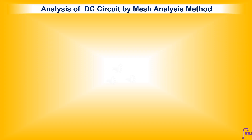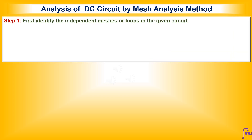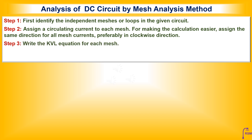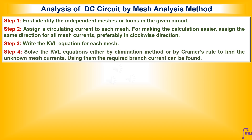To analyze a DC circuit by mesh analysis method: first, identify the independent meshes or loops in the given circuit. Then assign a circulating current to each mesh. For easier calculation, assign the same direction — preferably clockwise — to all mesh currents. Then write the KVL equation for each mesh and solve using either the elimination method or Cramer's rule to find the unknown mesh currents, from which the required branch currents can be found.